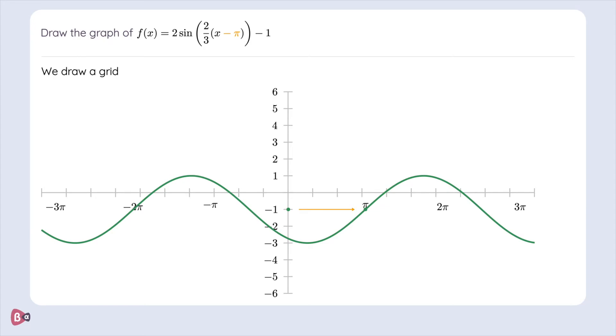This can be confusing at first but once you practice enough you'll get the hang of it. So this is it. That was the graph of the formula 2 times the sine of 2/3 x minus pi minus 1.